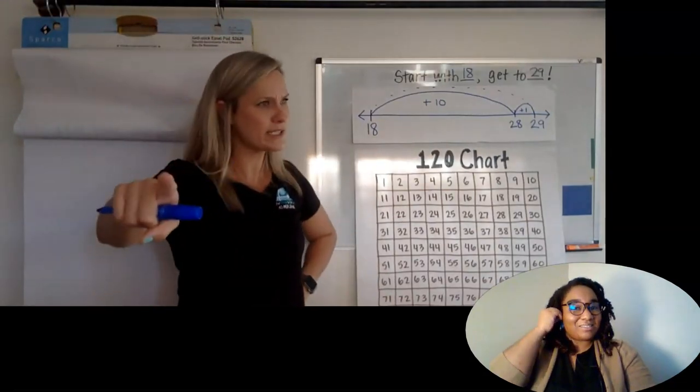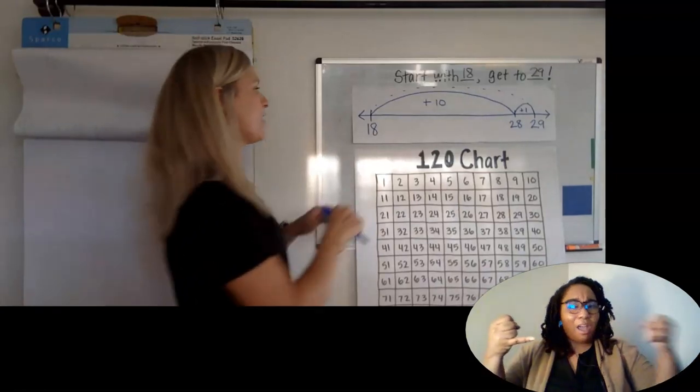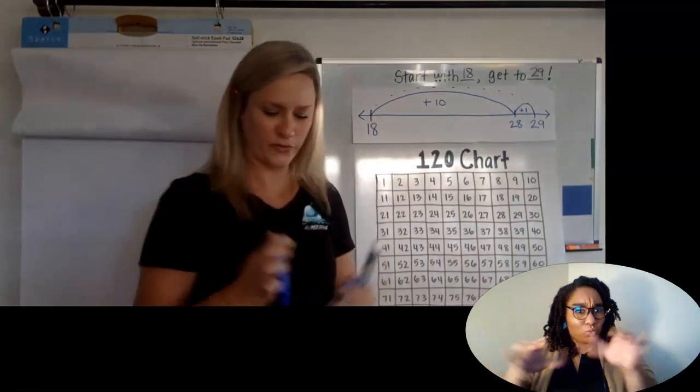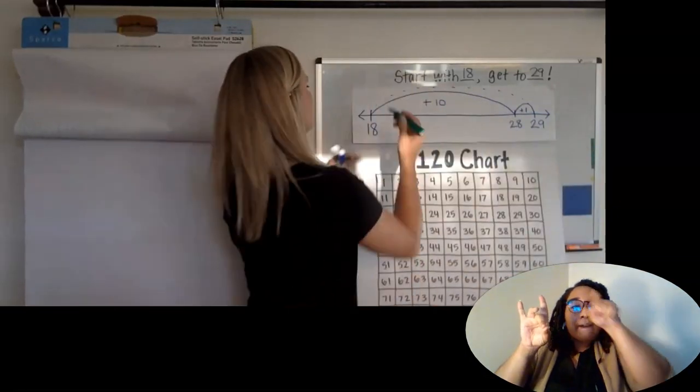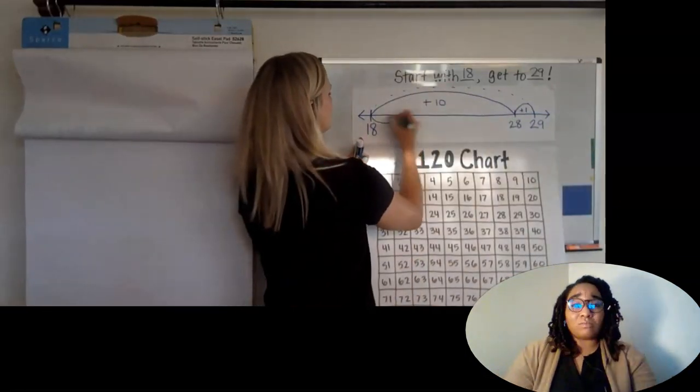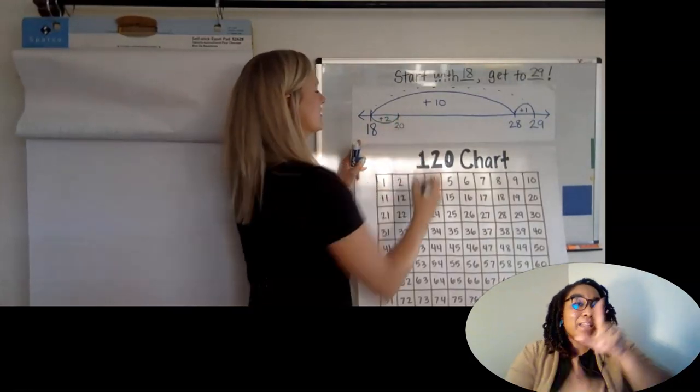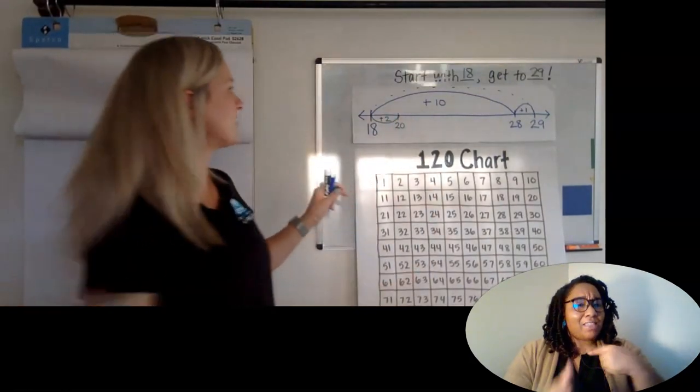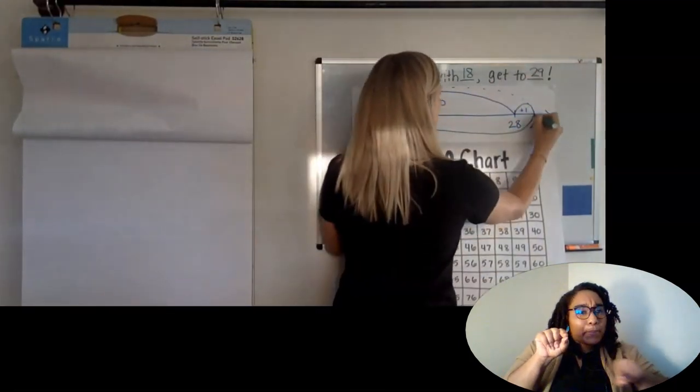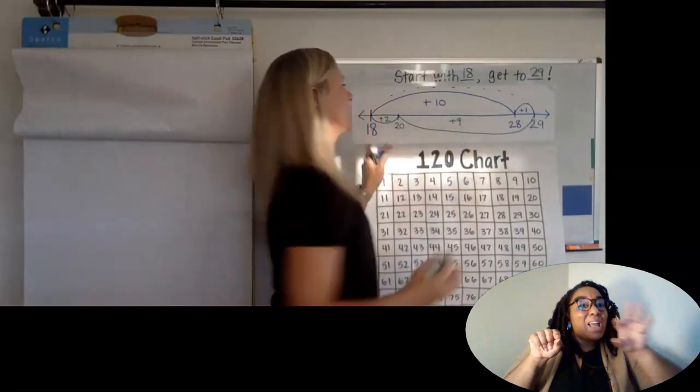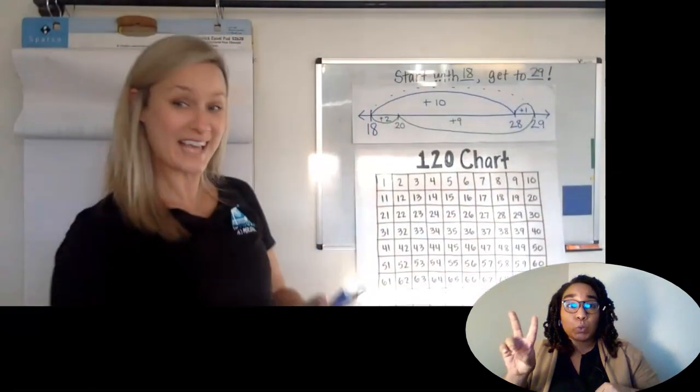Okay. Did you do it with the number line? Did you do it the hops this way? Maybe you decided, I'm going to hop two first. Let me change out my color. Maybe you decided, I'm going to hop two first and get to 20. And then you're like, Oh, I just have to get to 29. And that's just nine more. And two plus nine makes 11. Maybe you did that one.